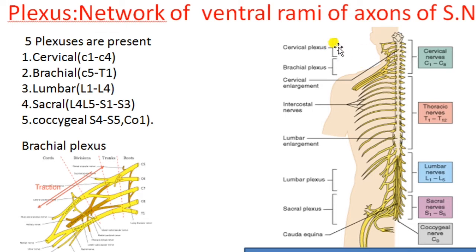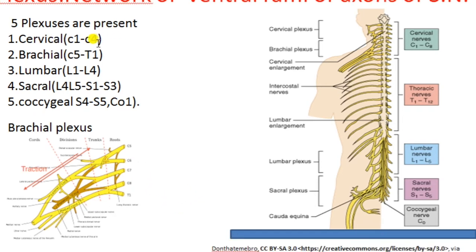There are five plexuses present in the human body: cervical plexus, brachial plexus, lumbar plexus, sacral plexus, and coccygeal plexus. The cervical plexus is formed by the ventral rami of cervical spinal nerves C1 to C4, and the fibers arising from the cervical plexus go to the head, neck, and shoulder regions.